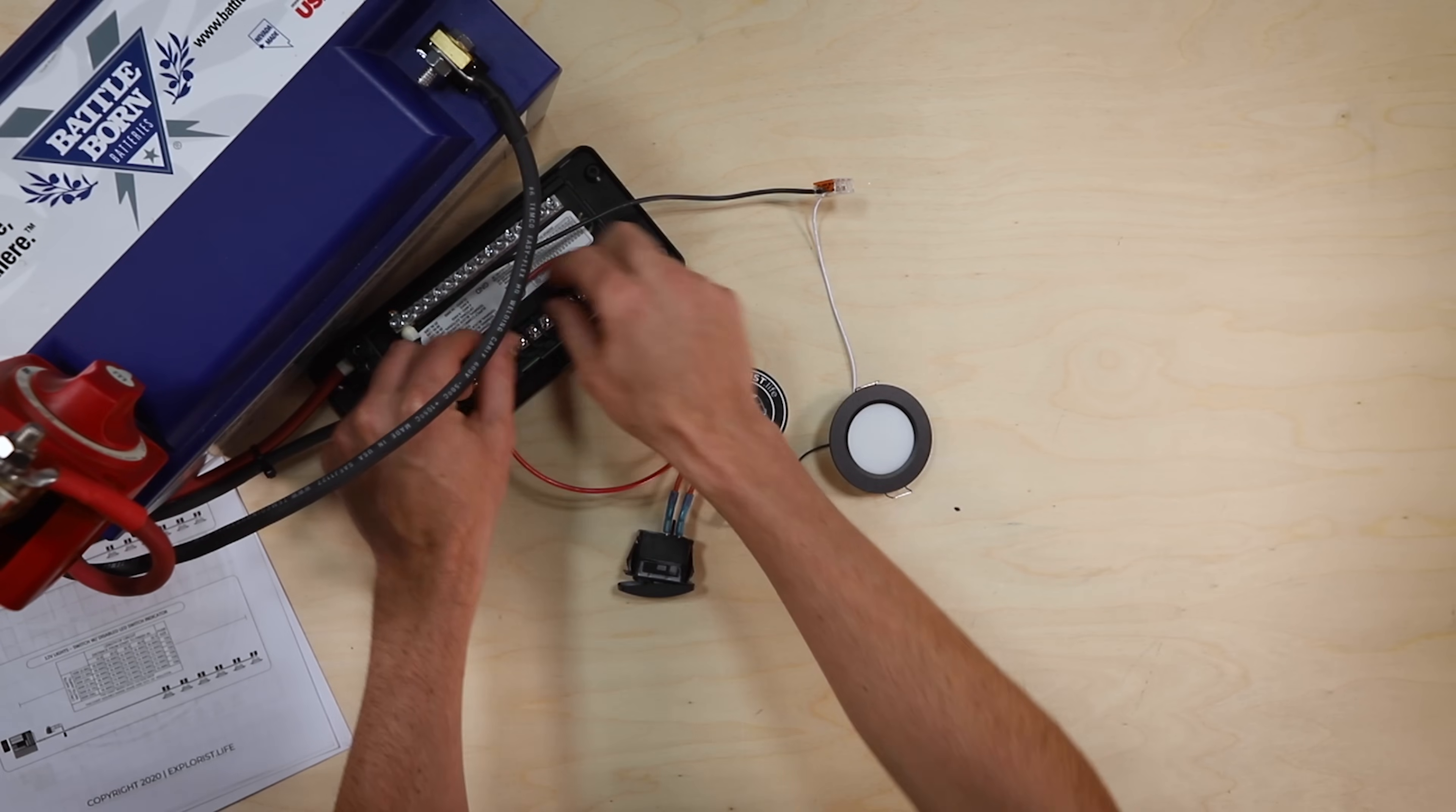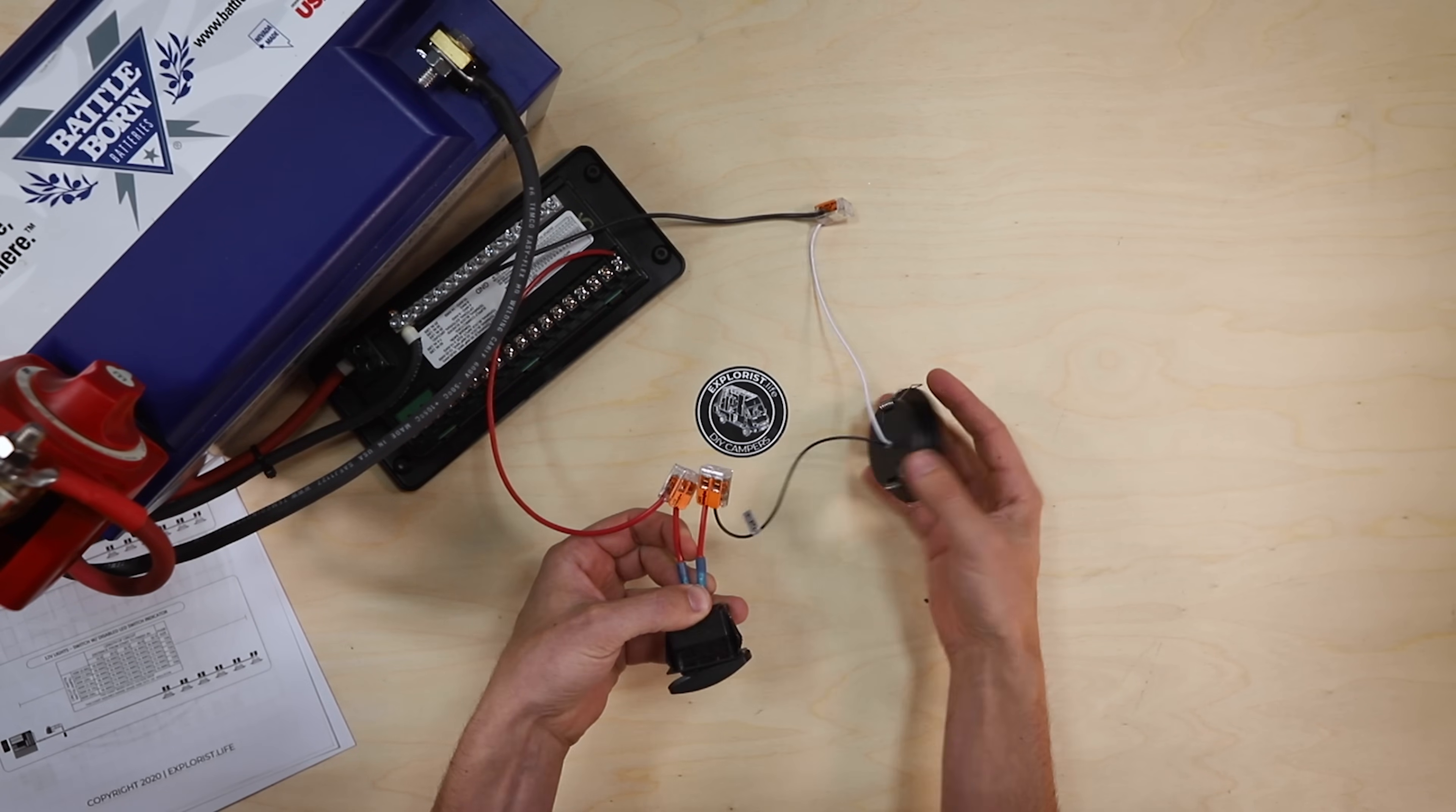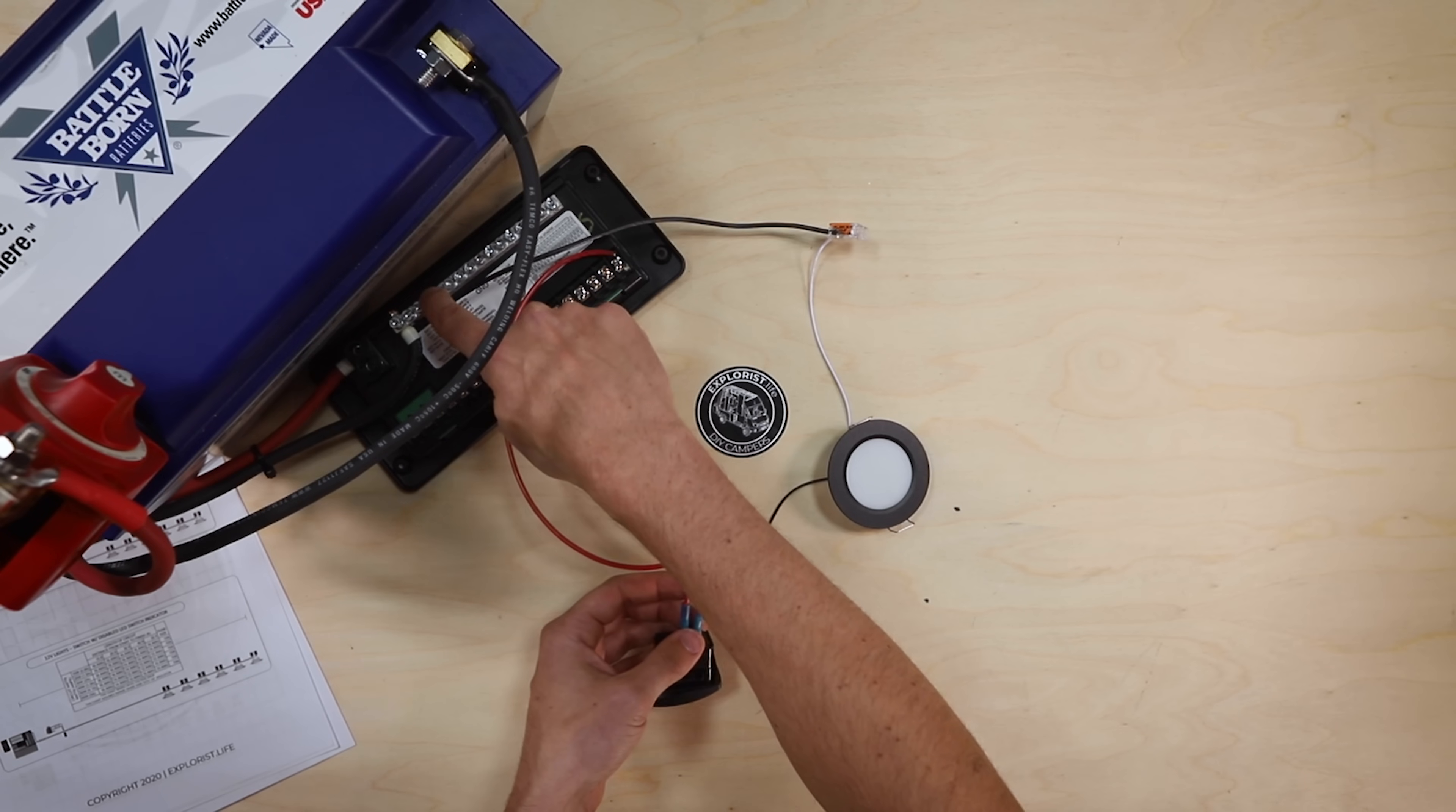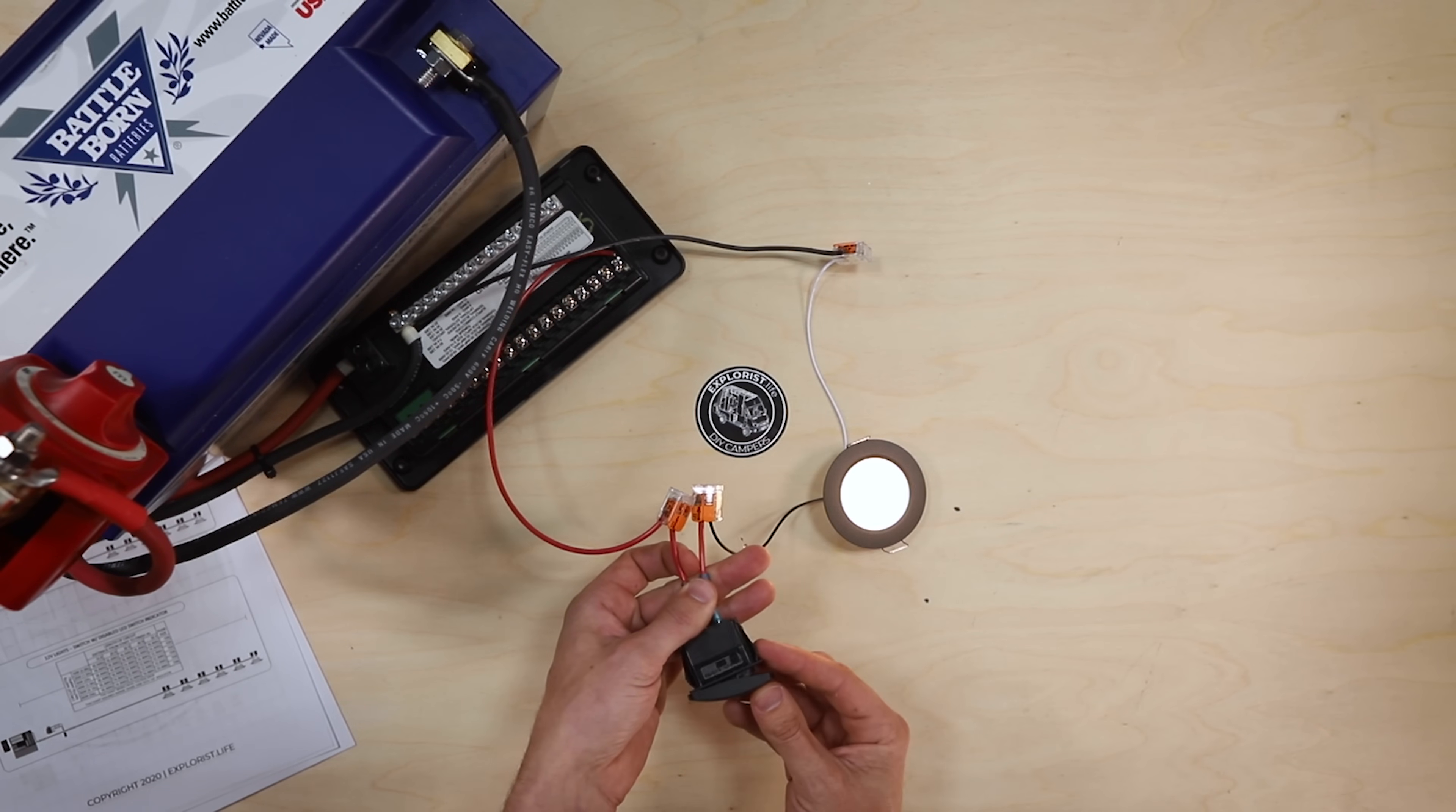In this circuit, the positive wire comes from the fuse block through the switch, other side of the switch to the light. And then the negative wire comes out this way, lever nut here, and back to the negative bus bar. So the negative side in this system is not switched, only the positive wire. We're just breaking the positive wire connection here.